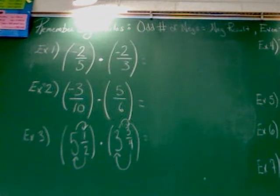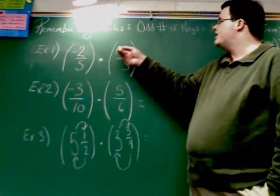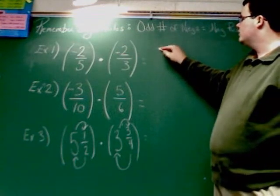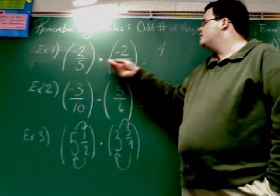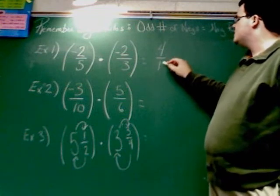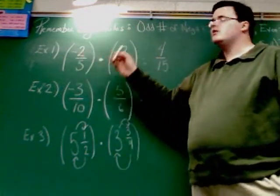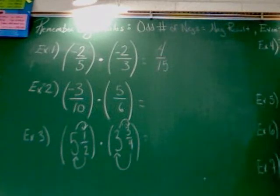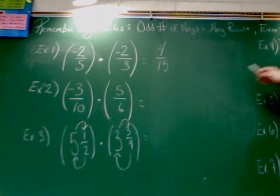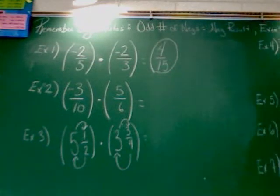In example one, we've got negative two-fifths times negative two-thirds. Remember, multiplication problem, you can just go straight into multiplying. There's nothing fancy we have to do. So I can do two times two, which is four, five times three, which is 15. And as you can see, we have two negative signs in the problem. Well, that's an even number, and if there's an even number of negatives, the result is positive. So we've got our answer.